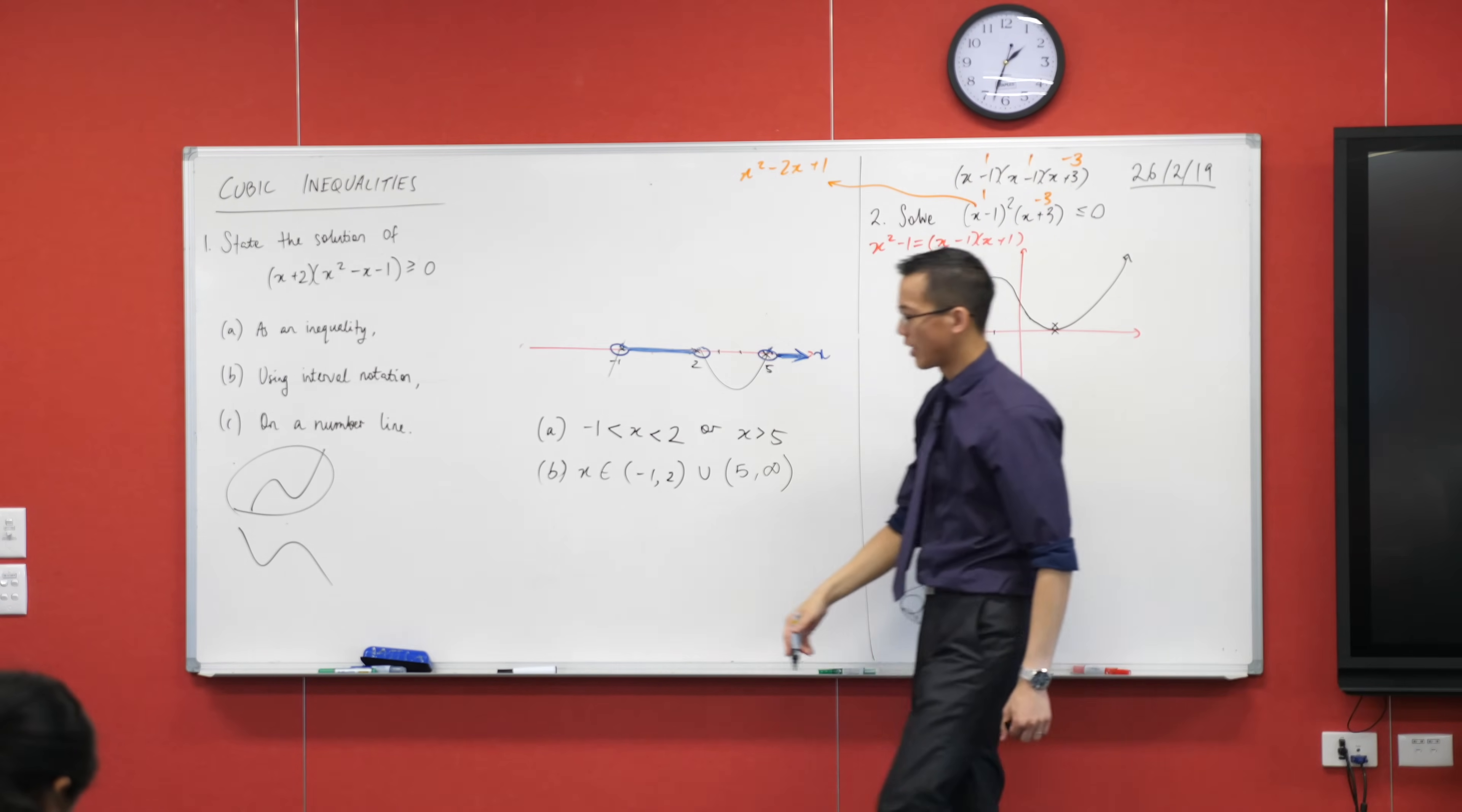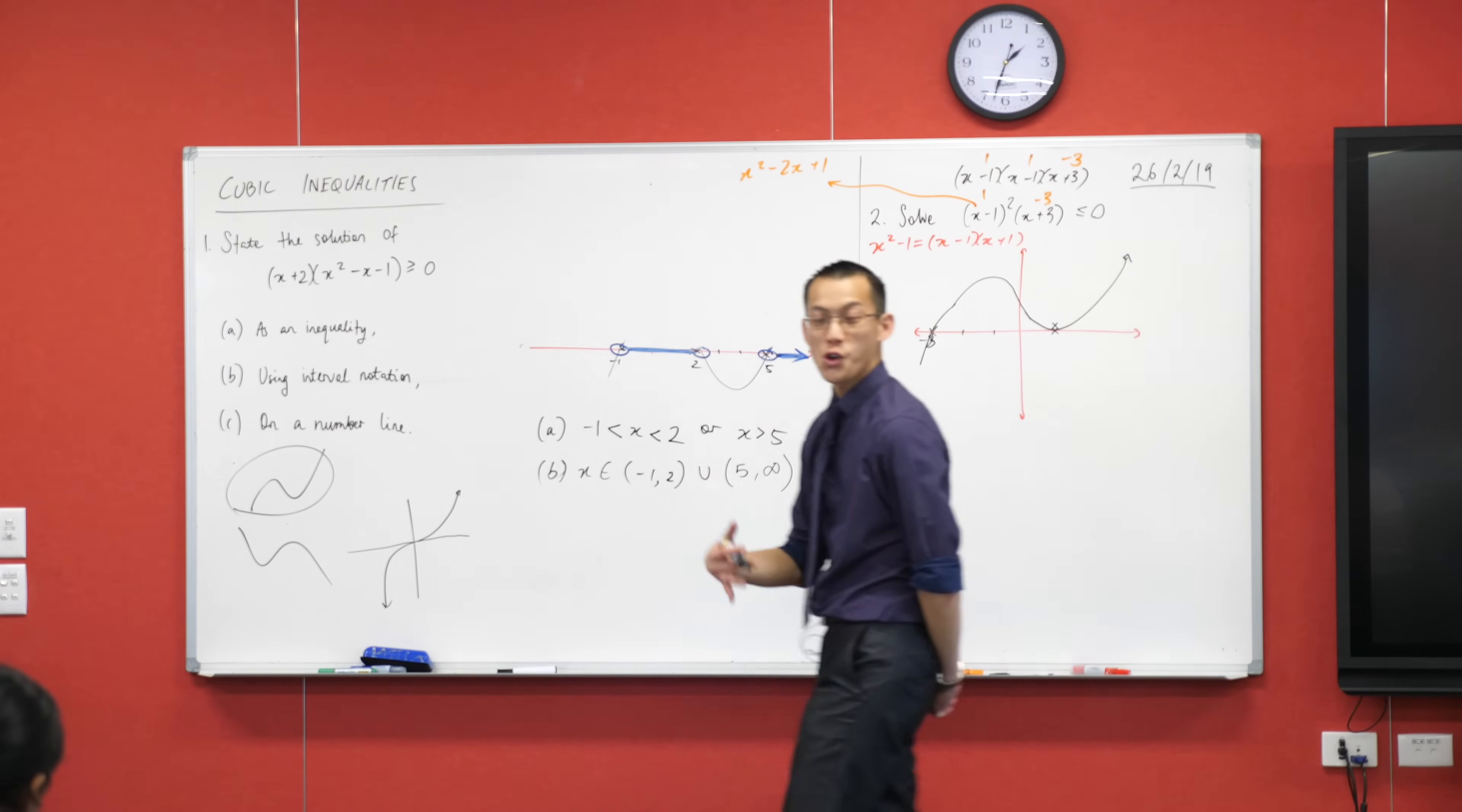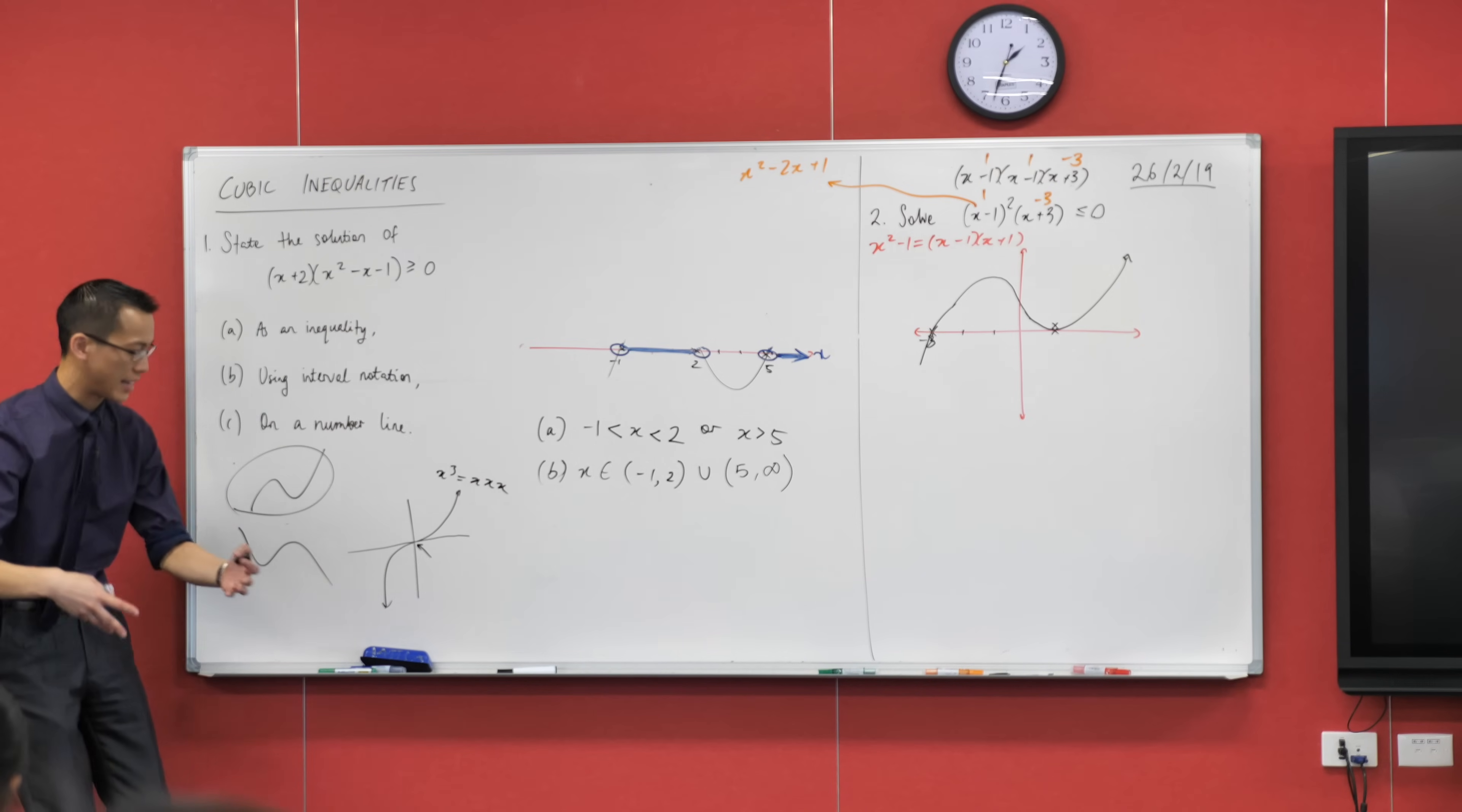The first one we did this morning was y equals x cubed. Right? y equals x cubed. Have a look at it for me. How many x-intercepts does it have? You could either say, you could say, there's one. It's right there. Or, being that x cubed, you could write that as x times x times x. It's like there's a root zero here, and here, and here. It's almost like there's three roots all sitting on top of each other. There.